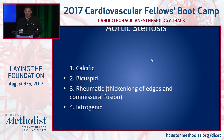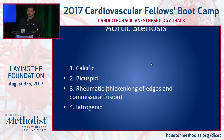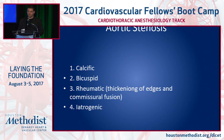Major causes of aortic stenosis — this is probably one of three slides I have with text. Calcific, bicuspid valve, rheumatic. Rheumatic differs from calcific because you can get thickening of edges and commissural fusion on top of possible calcifications. And then, of course, iatrogenic.